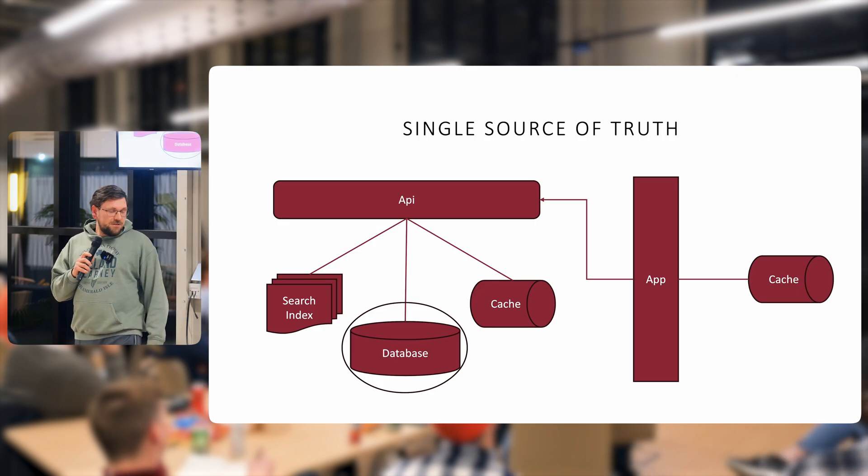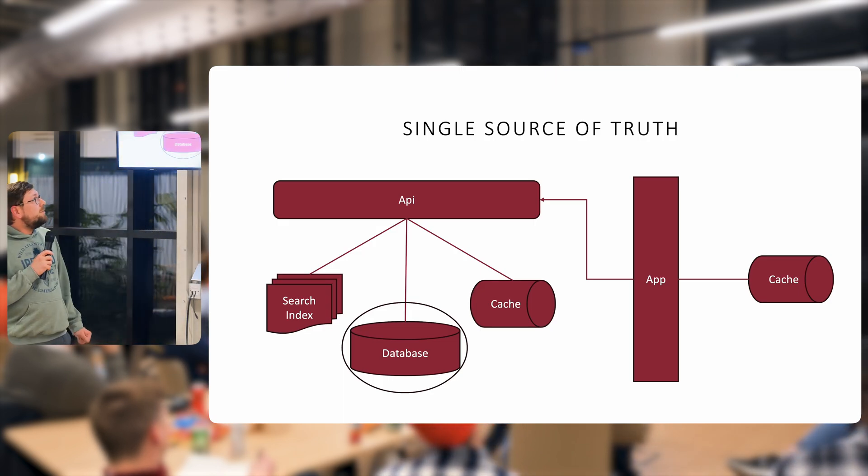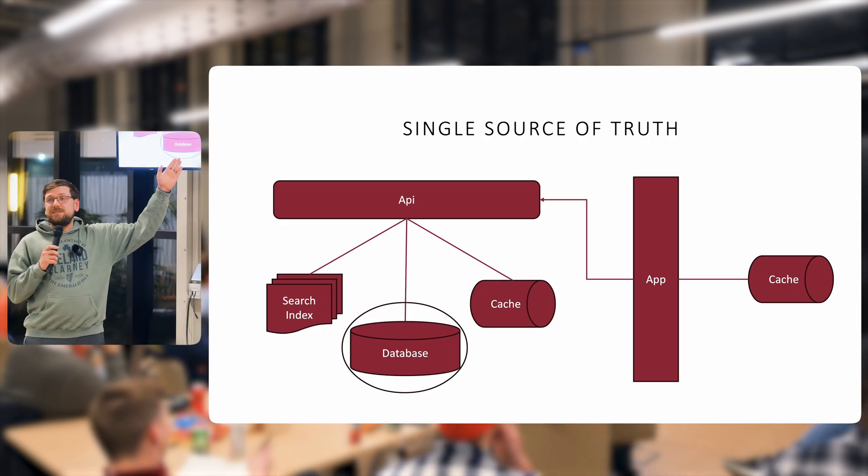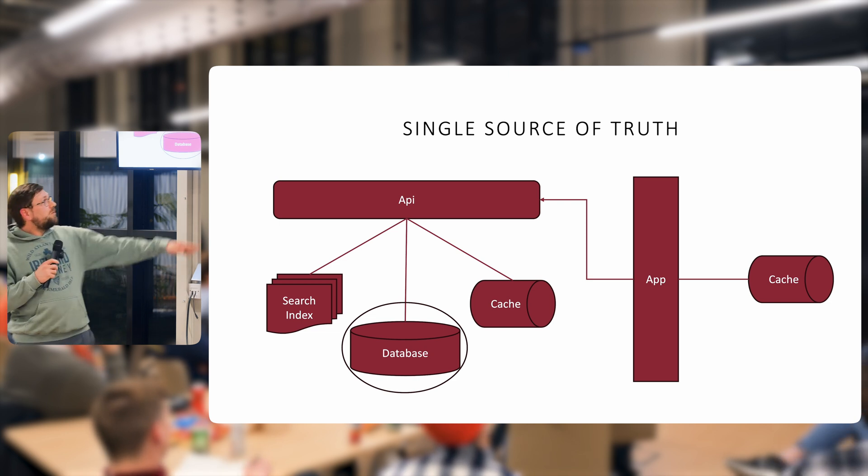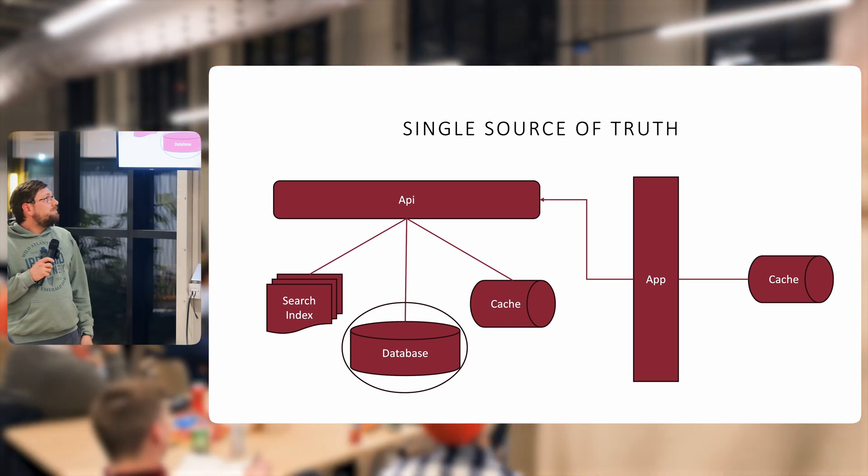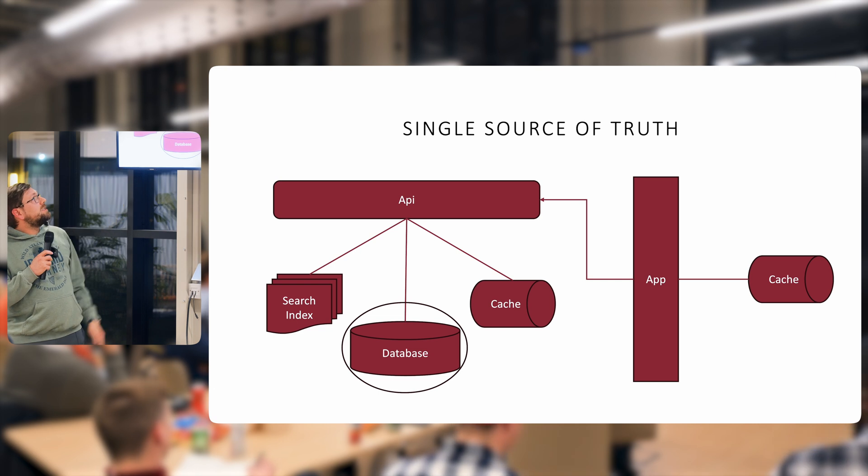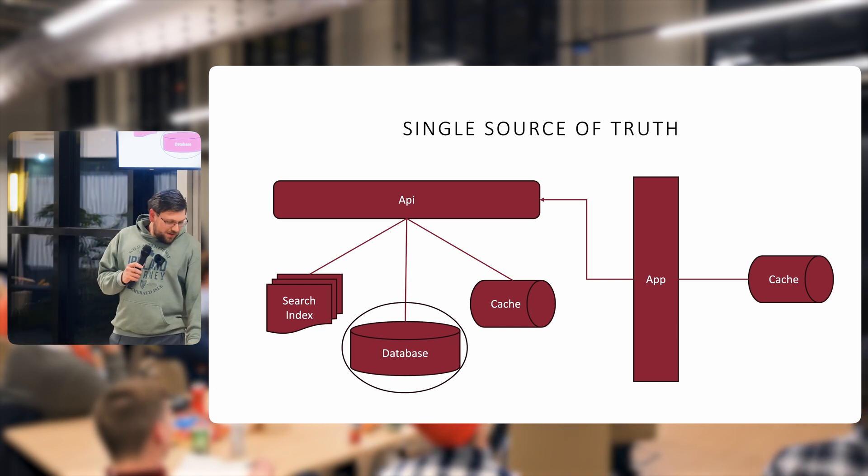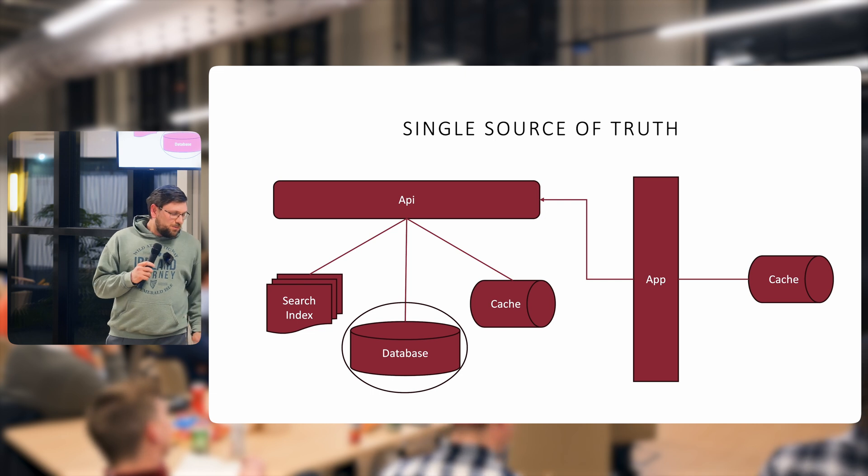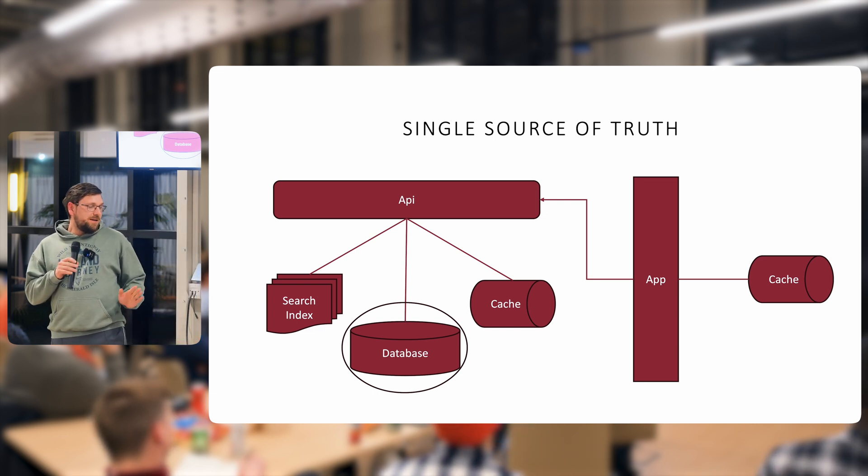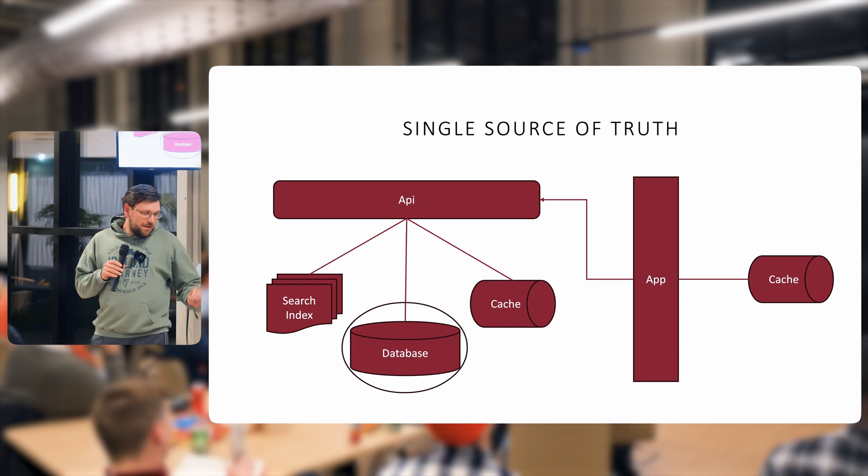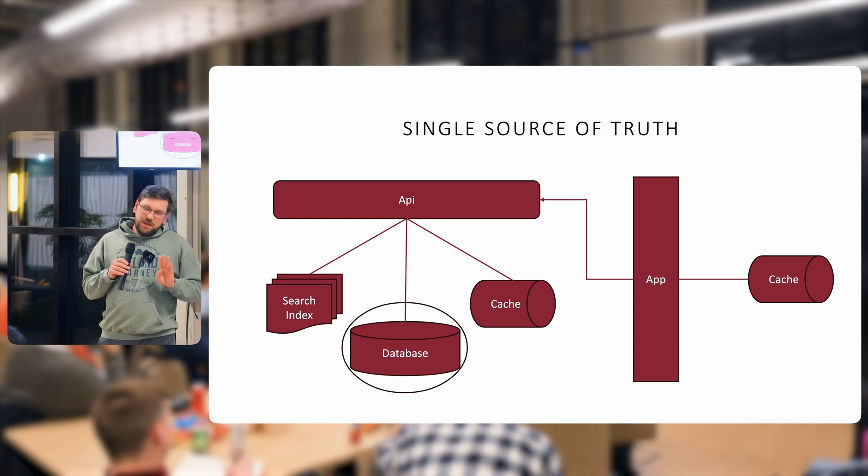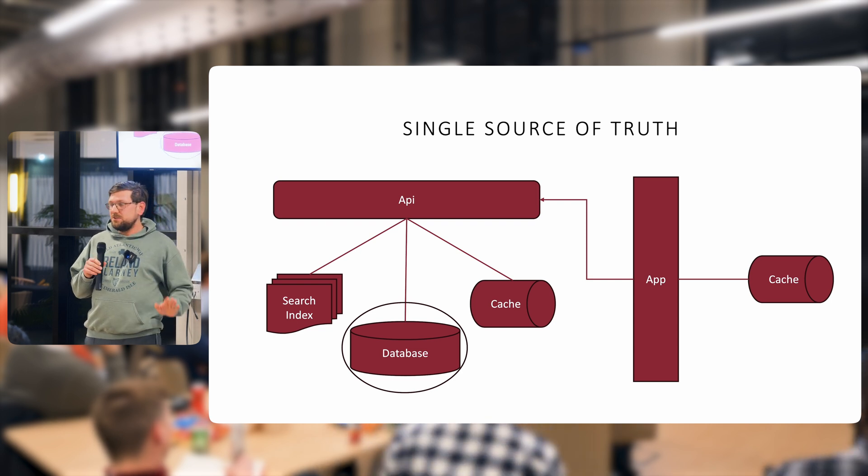So back to our single source of truth. Most people will argue that the database is their source of truth. It could also be your cache. And in some cases even your search index for some reason. Seen it. And so we're going to kind of explore how we manage our source of truth and we're going to cover three basic rules for managing sources of truth.